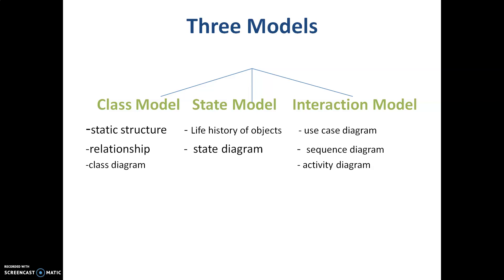The state model deals with keeping track of the life history of objects — when they are created, when they are destroyed, and what purpose they have served with respect to time. This is represented using a state diagram. Finally, the interaction model is the third pillar, showing how different classes interact with each other, represented using a use case diagram, sequence diagram, or an activity diagram.